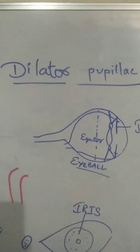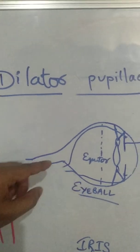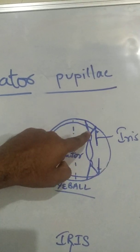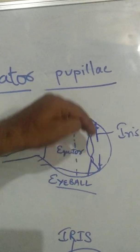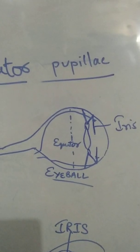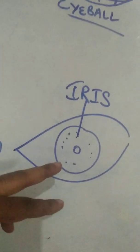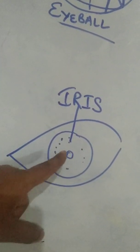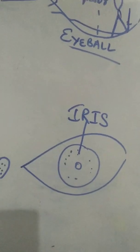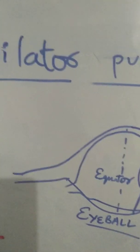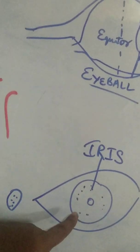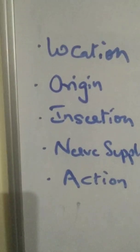Dilator pupillae is a muscle present within the eyeball. The optic nerve is in the posterior part of the eyeball. Anteriorly there is the cornea, the lens, the ciliary body, and from the ciliary body there is a curtain called the iris or iris diaphragm. The iris has an aperture called the pupil, which dilates and constricts to regulate the amount of light entering the eyeball. Dilator pupillae is located within this iris.